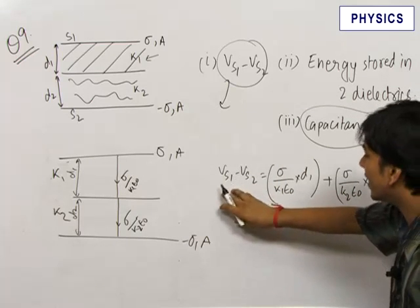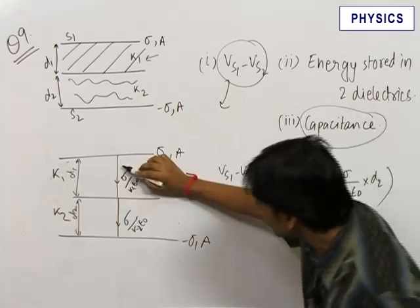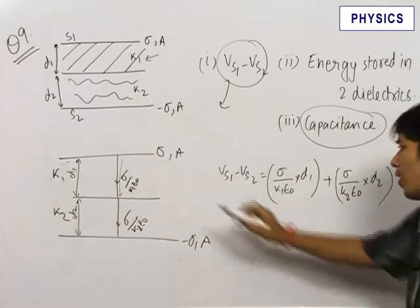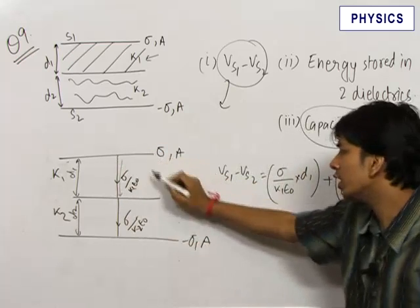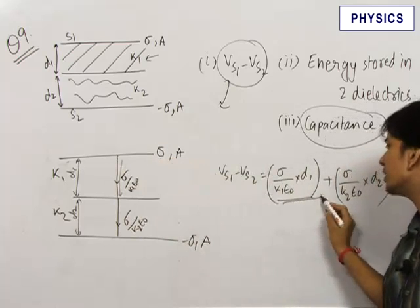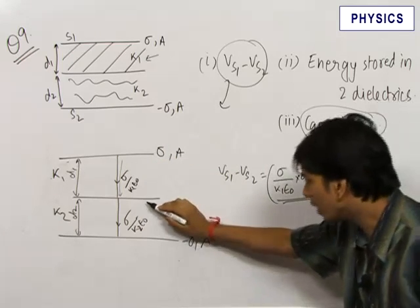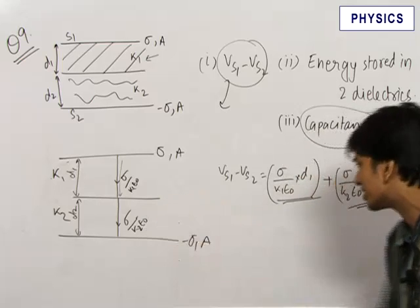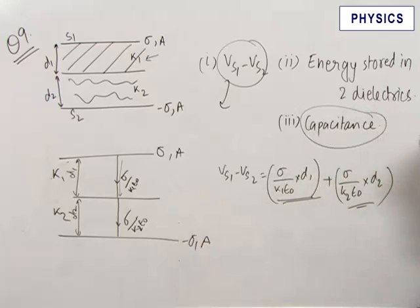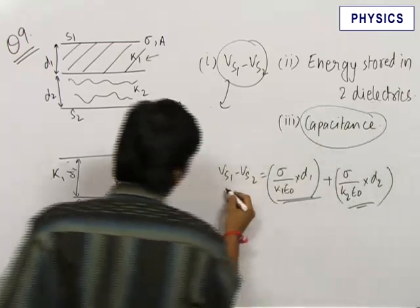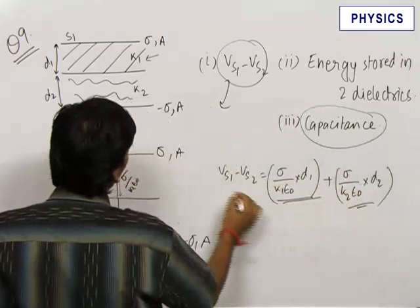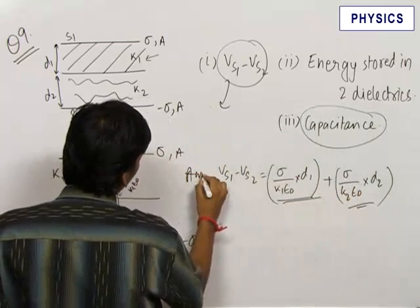As we go in the direction of the electric field, the potential reduces. Going from one plate to the interface the potential reduces by E times d, and from the interface to the other plate it reduces again by E times d. So the potential difference V_s1 minus V_s2 equals sigma·d1/(k1·epsilon_0) plus sigma·d2/(k2·epsilon_0). This is our answer to the first part.